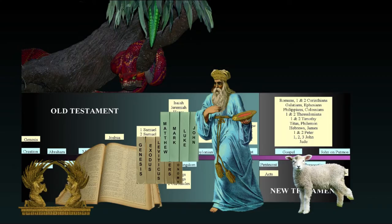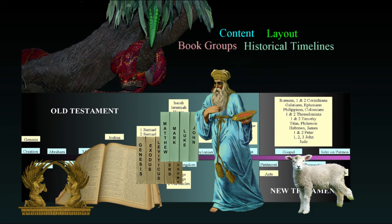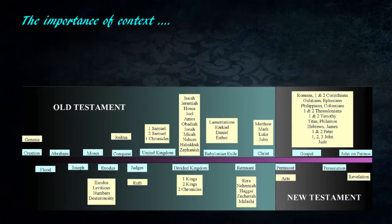In previous lessons we've discussed the content of the Bible — its layout, how the books are grouped, historical timelines, and the major divisions of the Bible. Once a foundation was established, we discussed symbolism in the scriptures, emphasizing the need to understand how meaning was assigned to symbolic forms, patterns of symbols, and interpreting prophetic language.